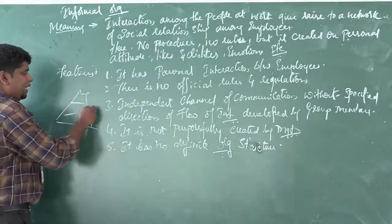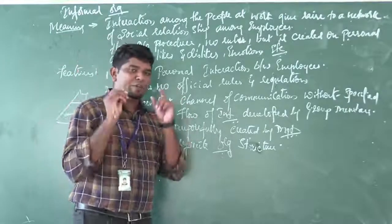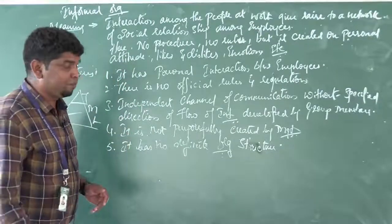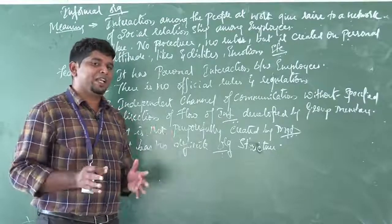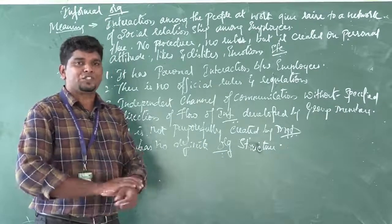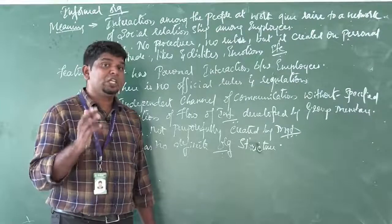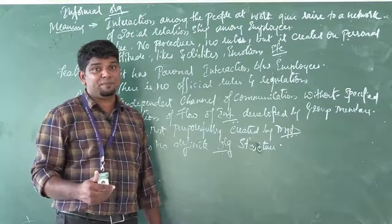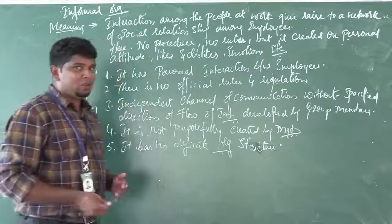Coming back to levels of management — top, middle, and low level — in formal organization, rules and regulations framed by the top level must be followed down the hierarchy. For example, if you are at work and get an urgent call because someone at home has been hospitalized, as per formal rules you must inform your superiors, get leave sanctioned from top level management, and then go home. That is the formal line of communication.